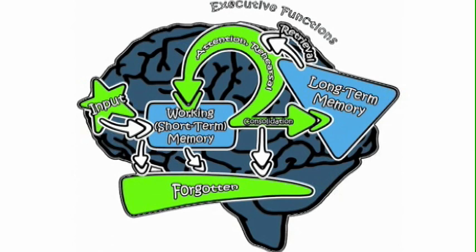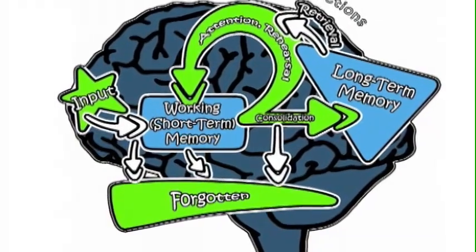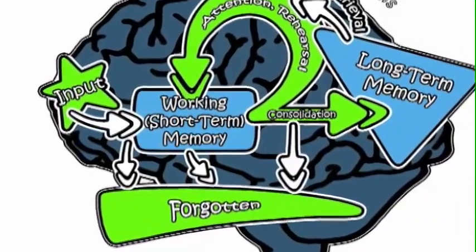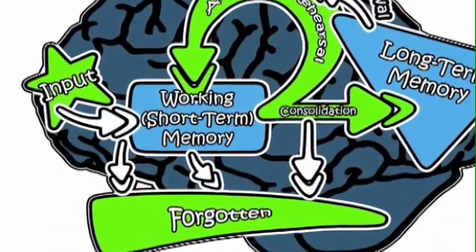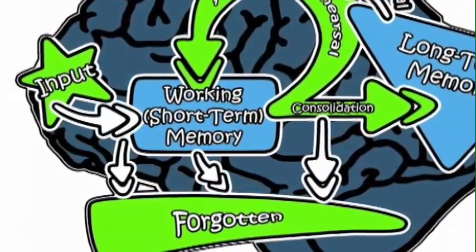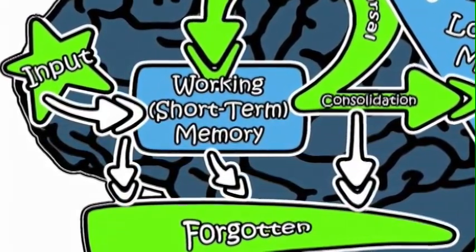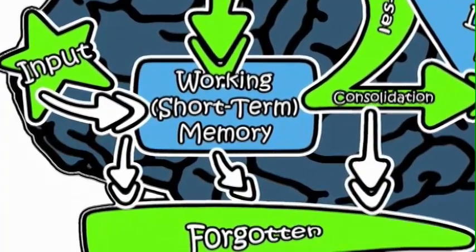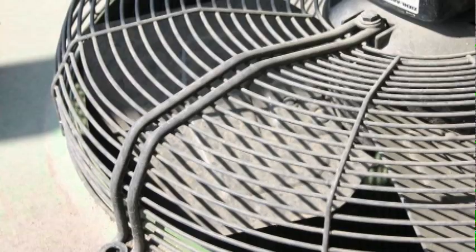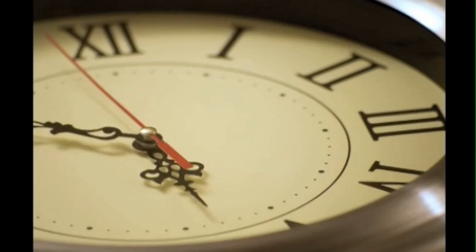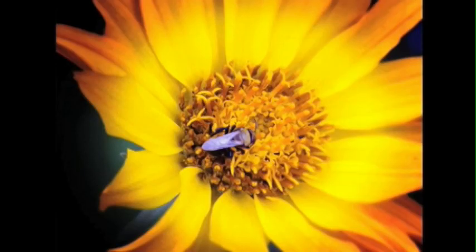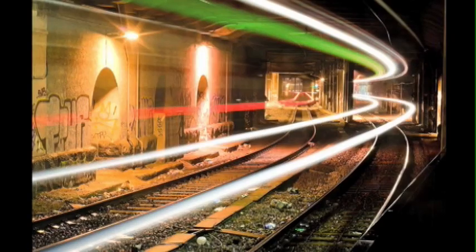In essence, the input arrow indicates new information entering the brain. Most information that we are presented with never makes it to the learning pathway and is lost. This is indicated by the downward arrow on the left, leading to the forgotten. We constantly receive an enormous amount of information — literally thousands of stimuli per second. We can't process all this information at one time.